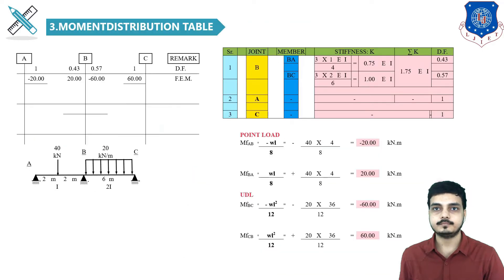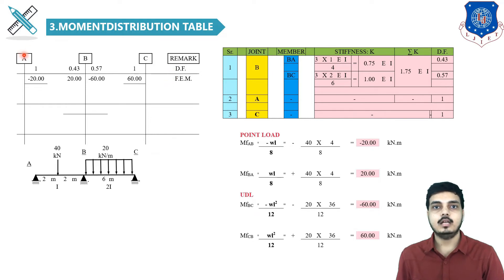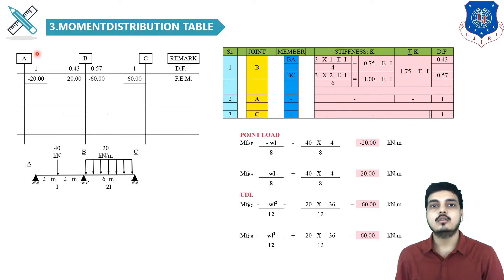Taking reference from the previous steps, step 3 is the moment distribution table, which is a little tricky to solve and requires focus. The number of columns equals the number of supports: one, two, and three. The spans are AB and BC. The first row of the table contains the distribution factor values found in the previous step.